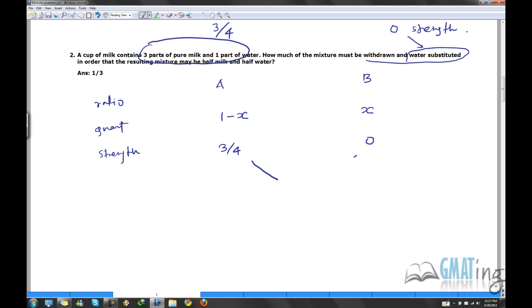So now let's do the same trick again. So we are mixing a 3 by 4 strength of milk with a 0% strength of milk which is basically water and this is giving me a half milk and half water. So half milk and half water is 1 by half strength. So 3 by 4 minus 1 by 2 equals 1 by 4 and half minus 0 gives me half.